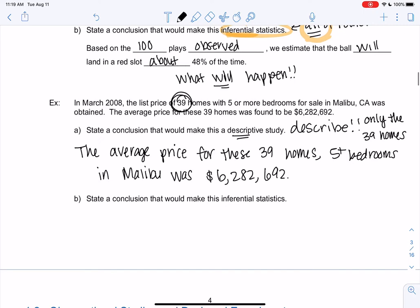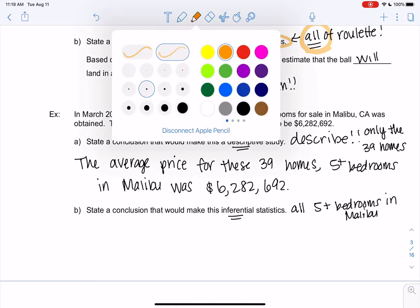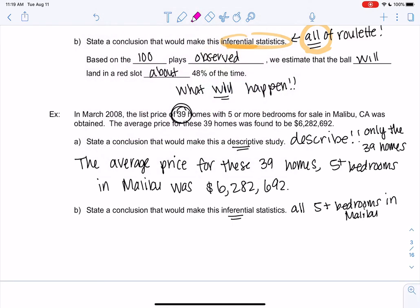If we want to make it inferential, now we're talking about all five-plus bedrooms in Malibu. So that's the big difference. So descriptive is only those homes. And inferential is now all.